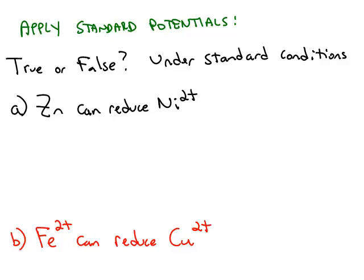A topic that's related to batteries but not exactly the same is a question like this: true or false? Under standard conditions, zinc can reduce nickel 2+. What makes this different from the battery is when we did a battery, a battery always had to be spontaneous. And so we forced the reaction to be the way that would give us an overall spontaneous reaction. In a problem like this, we can't do that. We have to follow the way the question is worded.